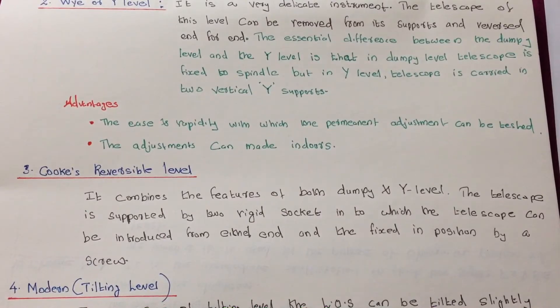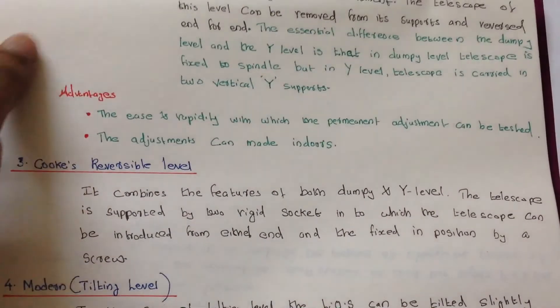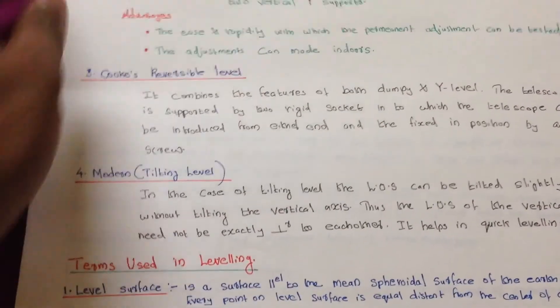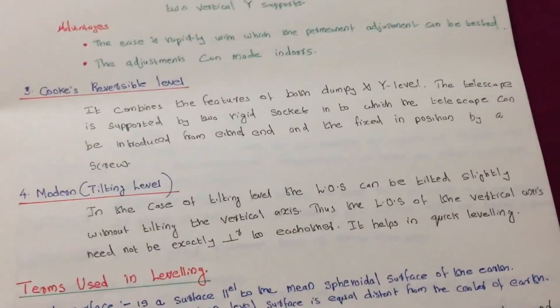Either end and the fixed in position by the screw is used for positioning, the fixing the position. A screw is used in Cook's reversible level. And we'll go to the next one that is modern or tilting level. I am also tilting my camera you can see that.